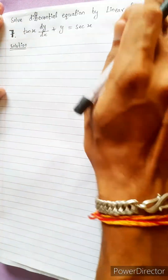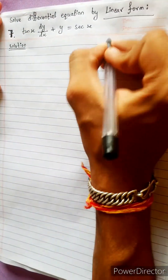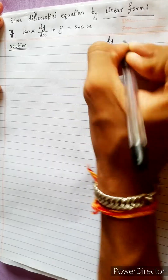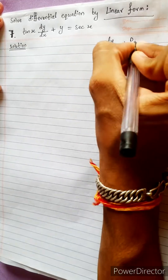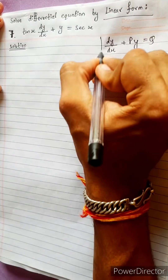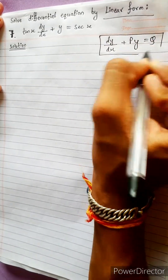Solve differential equation by linear form. Linear form: the standard form is dy/dx plus Py equals Q, where P and Q are functions of x.